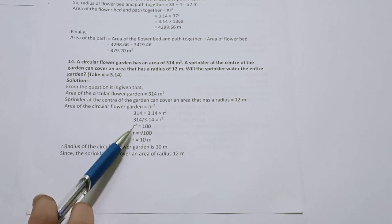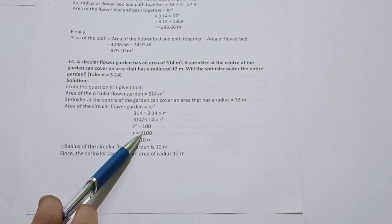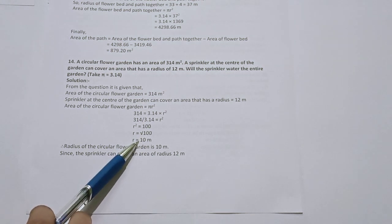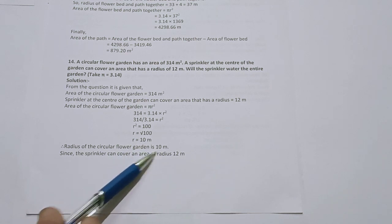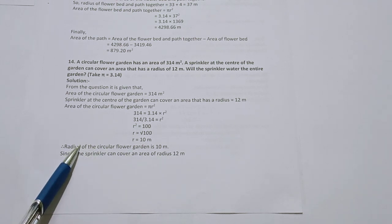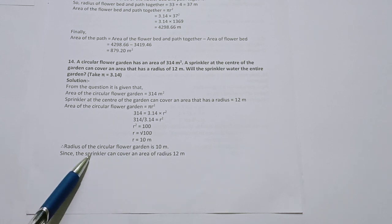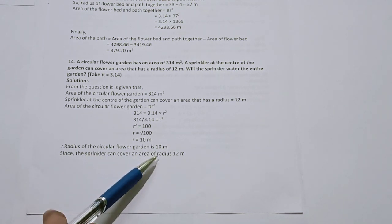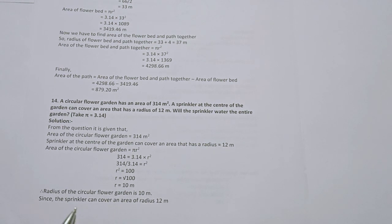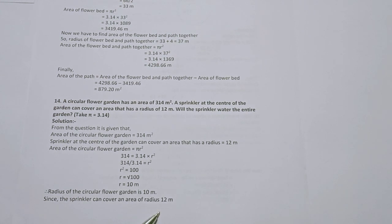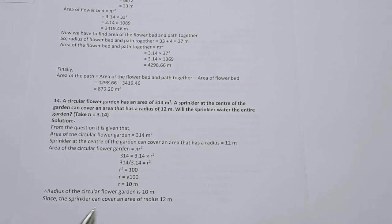We divide 314 by 3.14, which gives r squared equals 100. Taking the square root, r equals 10 meters (taking positive value). So the radius of the circular flower garden is 10 meters. Since the sprinkler can cover an area of radius 12 meters, and the garden radius is only 10 meters, the sprinkler radius is greater than the garden radius. Therefore, the sprinkler will water the entire garden.